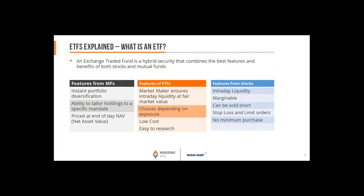The idea behind ETFs is pretty simple: it's an investment structure that has many of the beneficial features of a stock and many of the beneficial features of a mutual fund. Mutual funds, invented in the 1920s and catching on in the 1970s and 80s with North American investors, brought scale to end investors. They allowed investors to combine a diversified set of stocks or bonds — 20 to 50 — most of the time actively managed by a professional portfolio manager, giving ordinary investors institutional-scale access to a multitude of markets.